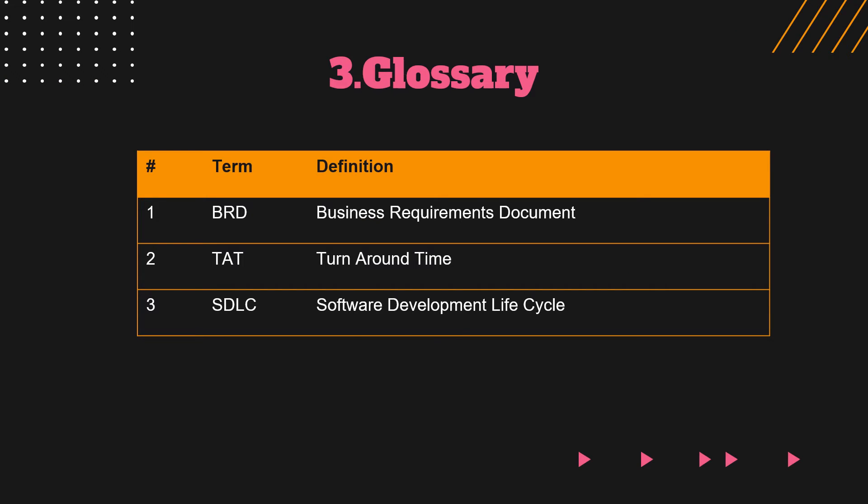Section 3: Glossary. A glossary near the start of an FRD acts as a referral guide for complex terms. The glossary should have an exhaustive list of abbreviations, acronyms, or industry-specific terminology used in the FRD. It will help ensure that both the team and readers can understand what each term means. As shown in the sample table on the slide, there are three terms that explain the meaning to readers of the document.